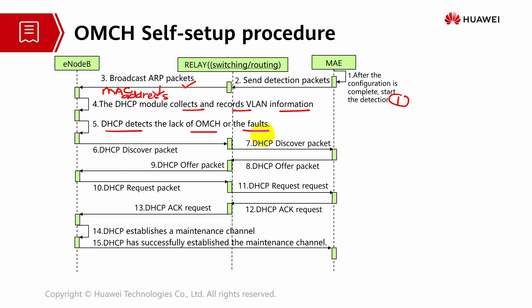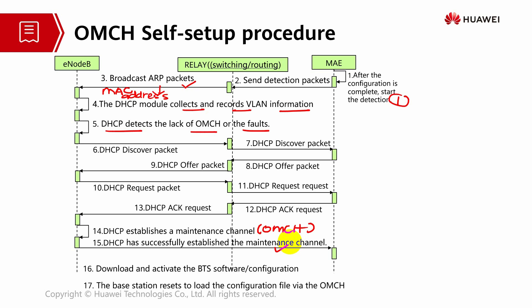Once the OM channel is established, the maintenance channel is set up successfully. If there is an issue it will automatically restart. Once the maintenance channel is up, you can download and activate the software and configuration. That completes the self-setup procedure. The base station then resets to load the configuration file via the OM channel.